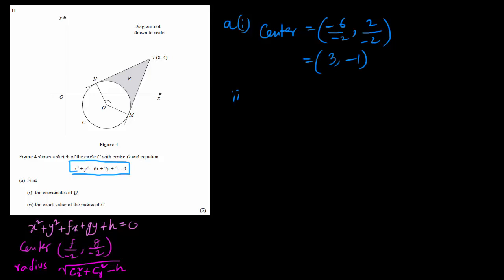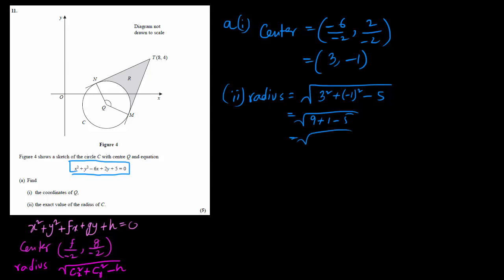In question number a2, we have to find the radius. The rule is: square root of the x-coordinate of the center squared plus the y-coordinate of the center squared minus the constant. The constant term without any variable is +5, so it becomes minus 5. That gives 3² + (−1)² − 5 = 9 + 1 − 5 = 5. So the radius is √5.